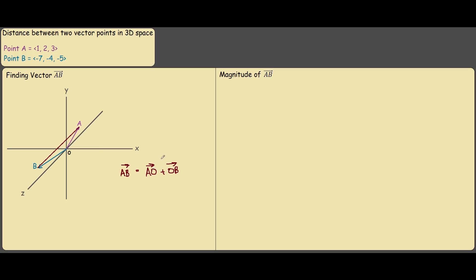However, since our vector A is defined as OA, we can switch this around into negative OA, which is the same thing as AO.